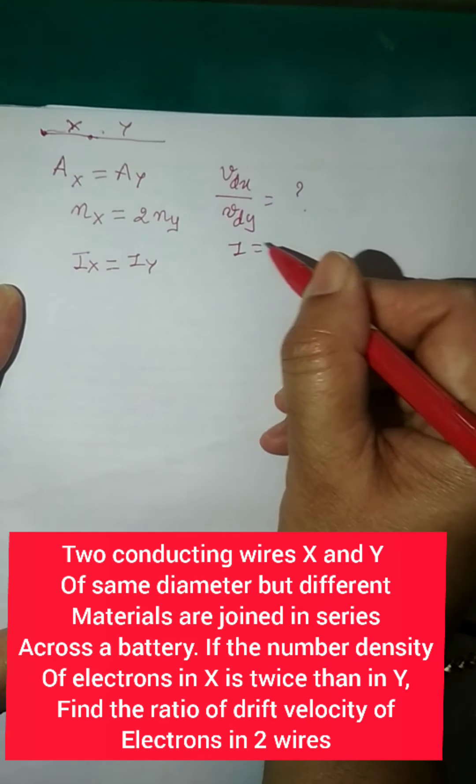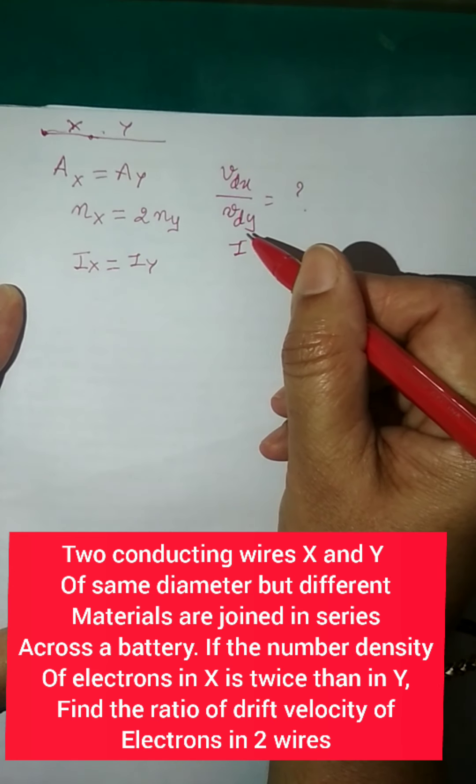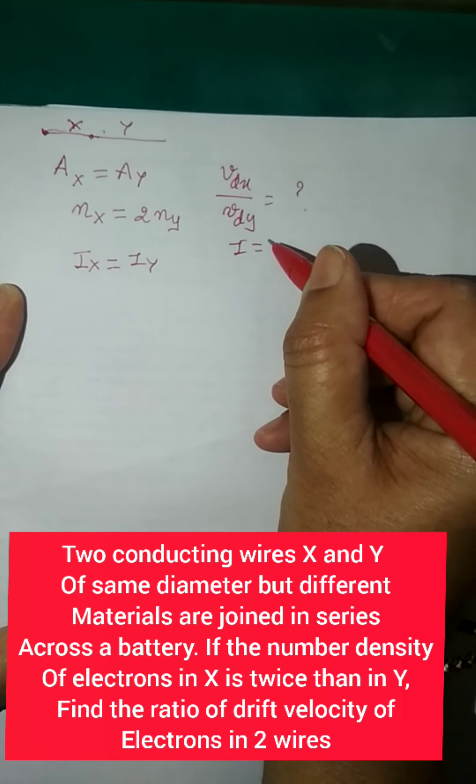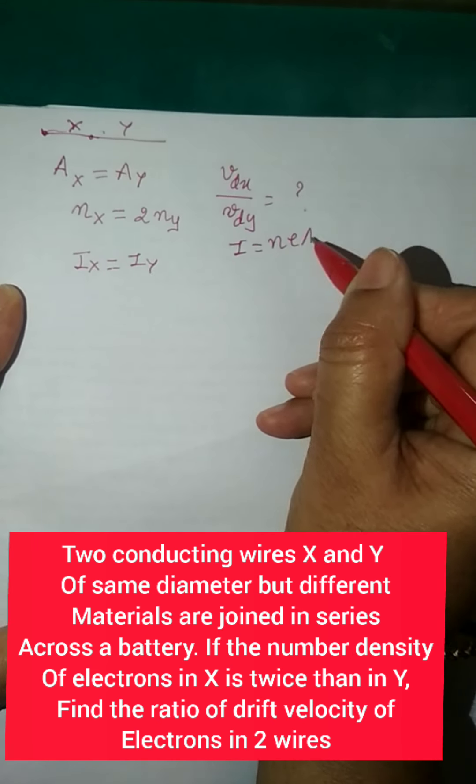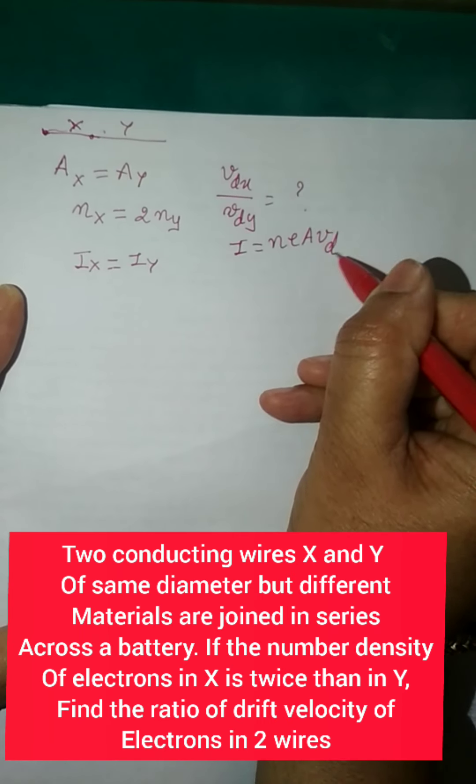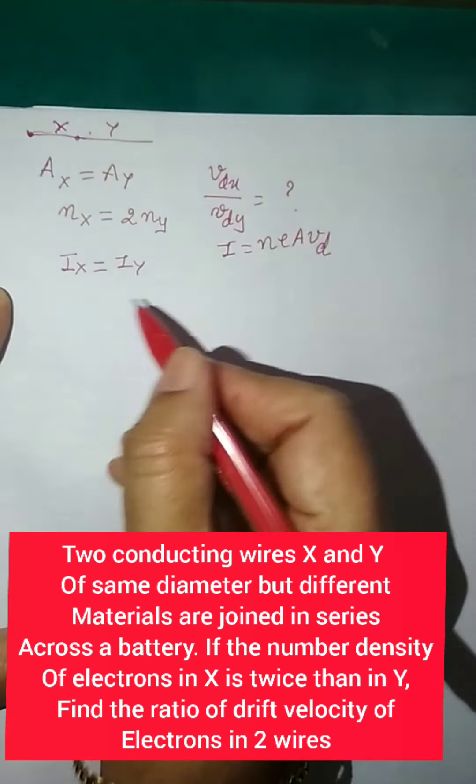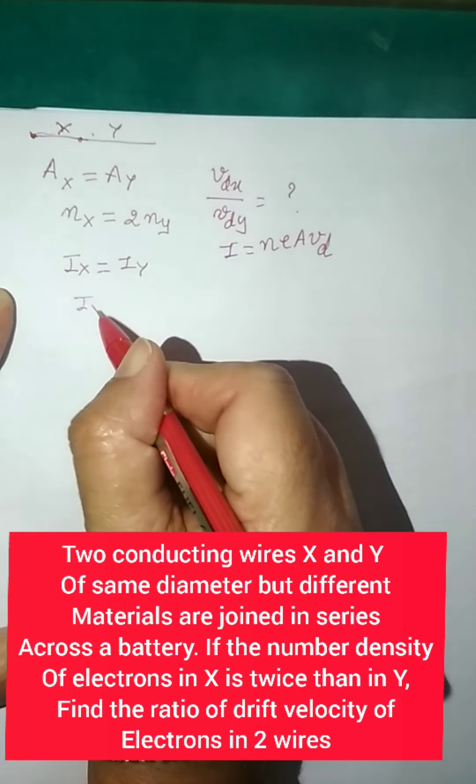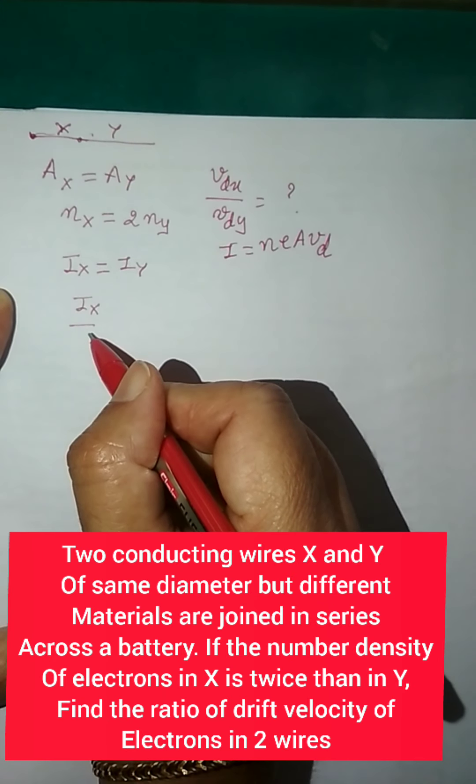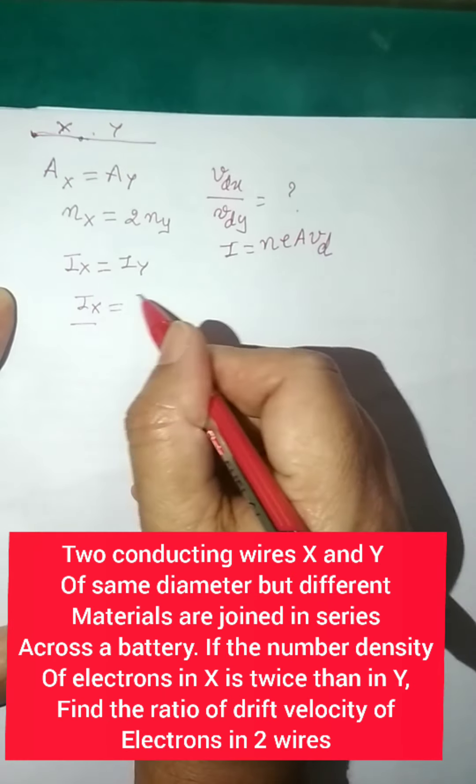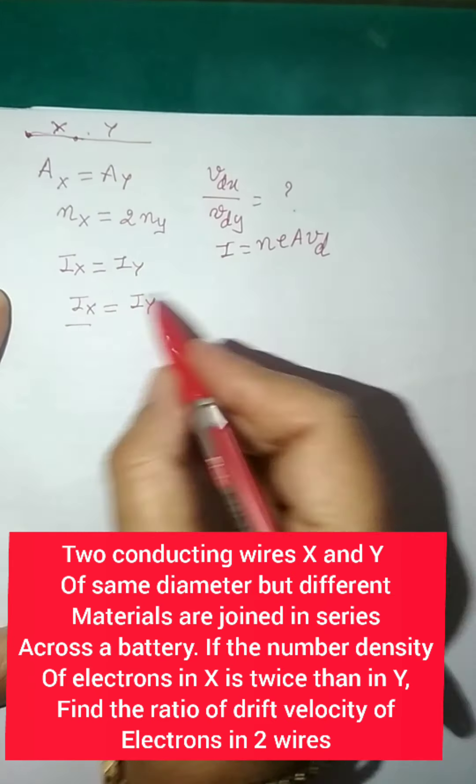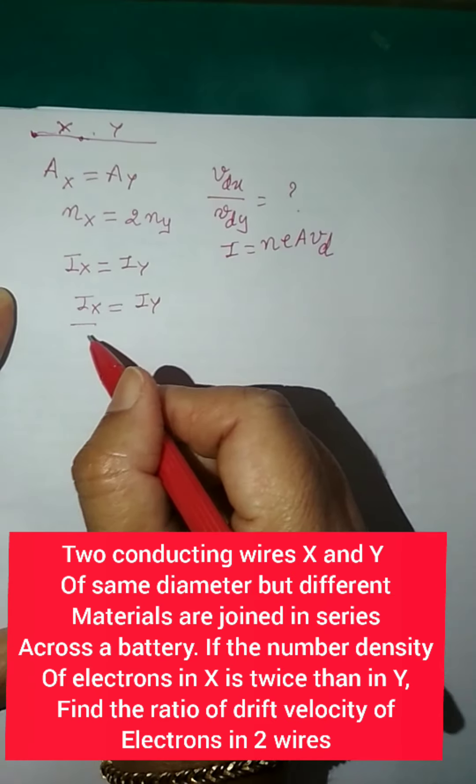Now you have done the formula. What is the formula connecting n, e, and Vd? So it's n e A into Vd, right. So now if you will write the ratio of Ix by, or you can say let's substitute the value of Ix and Iy equal. So let's substitute the value.